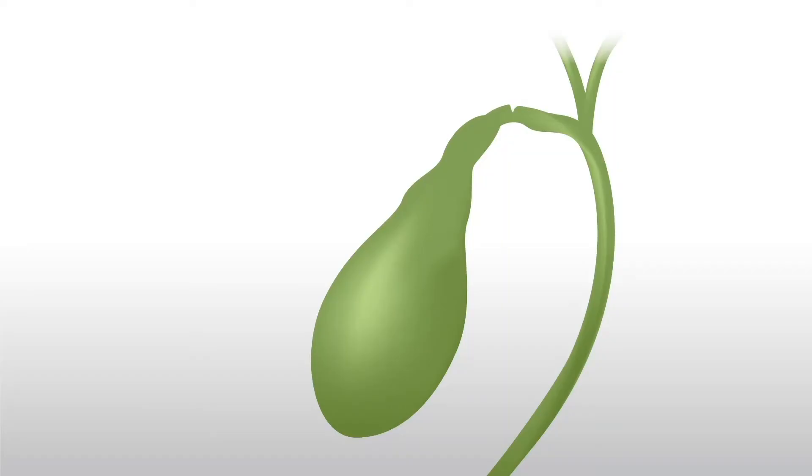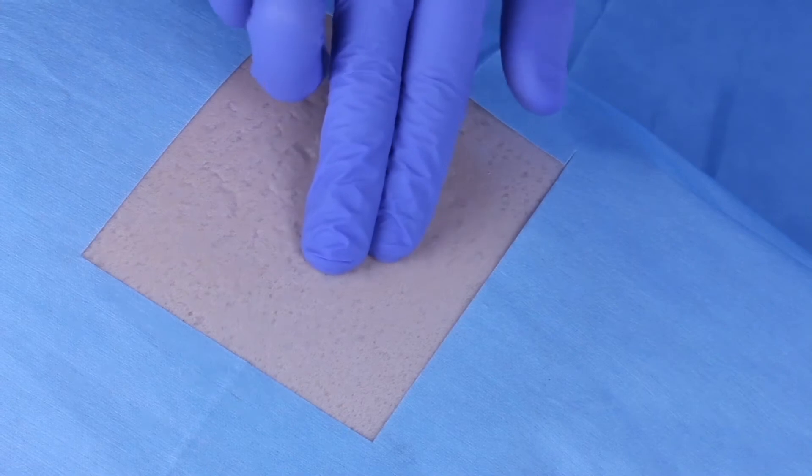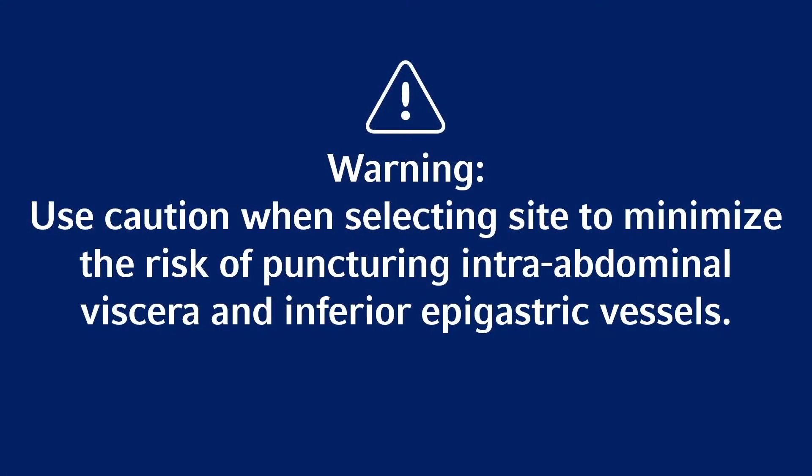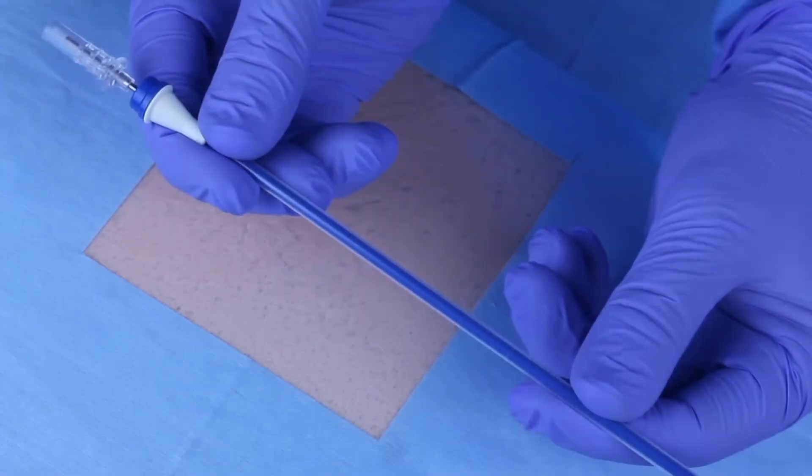Make a small incision in the cystic duct as far from the common duct as possible. Select insertion site for trocar guide catheter assembly. Warning: use caution when selecting site to minimize the risk of puncturing intra-abdominal viscera and inferior epigastric vessels. Remove guard.